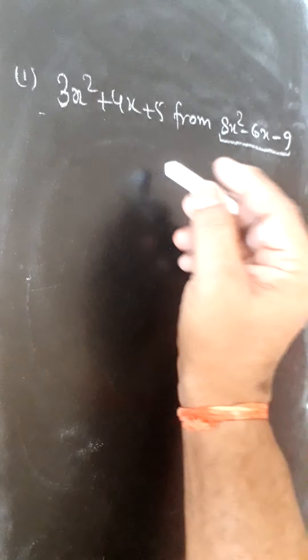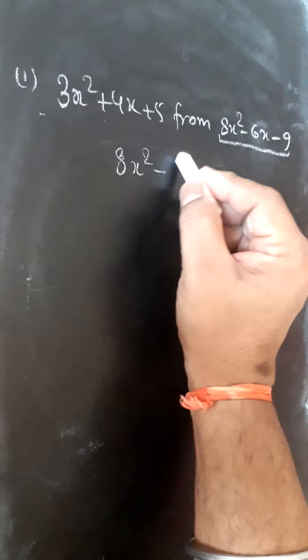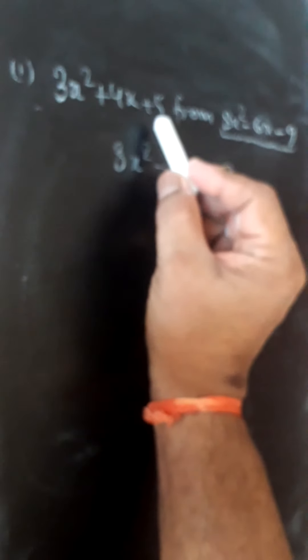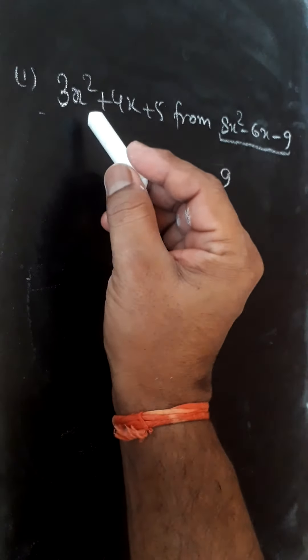We will write this one first: 8x² - 6x - 9. Below this, we will write this one with like terms together.